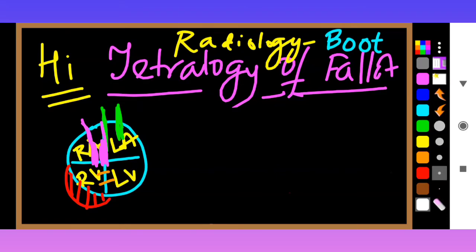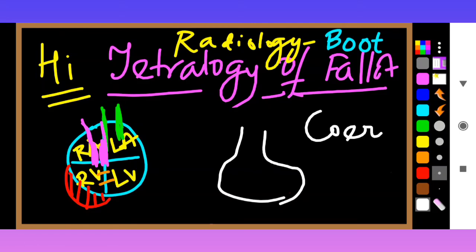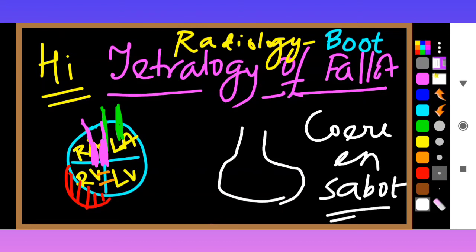When you look at the X-ray plate, it will show you a boot-like shape — so it is called boot-shaped heart. It is also called 'Coeur en sabot,' which means boot-shaped heart in another language. Always remember: boot-shaped heart is the radiology finding in Tetralogy of Fallot.